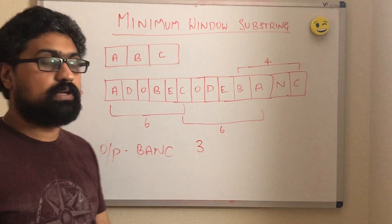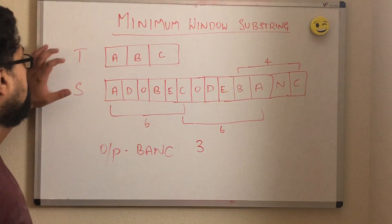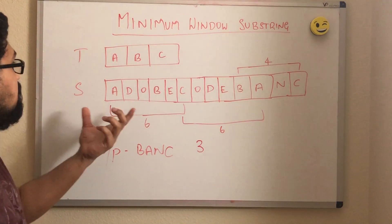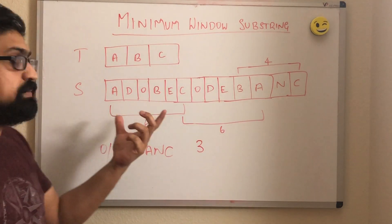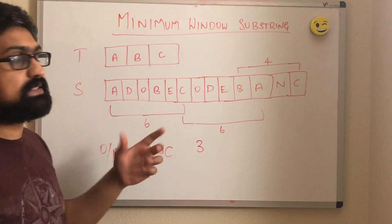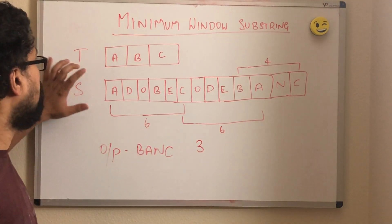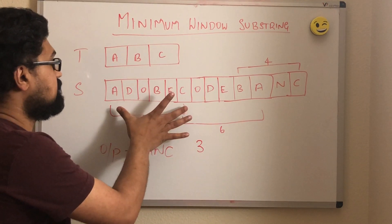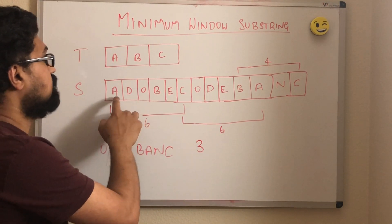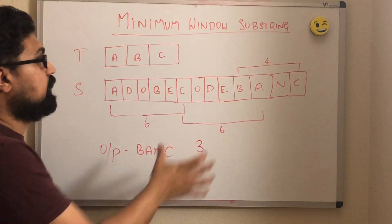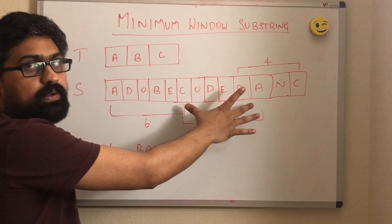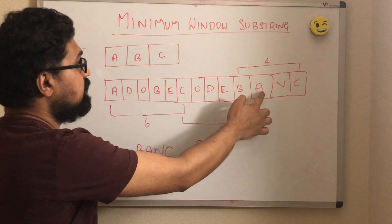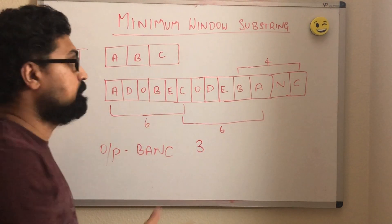let us try to understand the problem statement. We are given two strings t and s. We have to find the minimum window, or the minimum substring in s, that will contain all characters of t. So if you take this window in s, we have the characters a, b, and c.